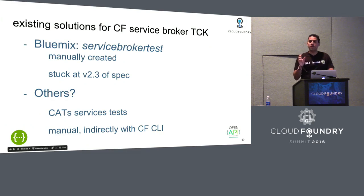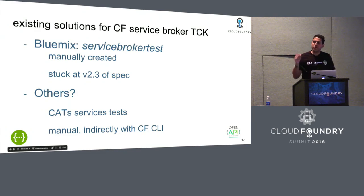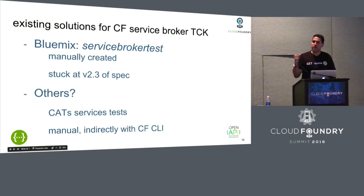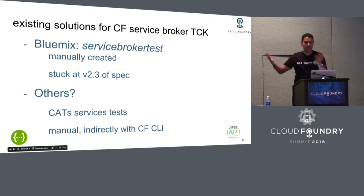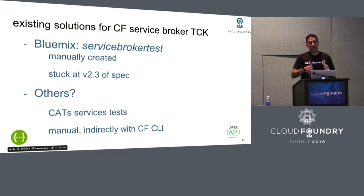It turns out that Bluemix had a little bit of a set of tests that they ran against service brokers, but it had exactly the problem we've been discussing — if you have a description and you're generating things from the description, that you avoid. The test was stuck in version 2.3. And why? Because IBM hired a set of interns to implement the test. They implemented it at the time they did their internship, and then it's stuck there. So you can hire more engineers to go do more of that work, or if we go with our approach, every time you regenerate. So that's the value of Swagger.